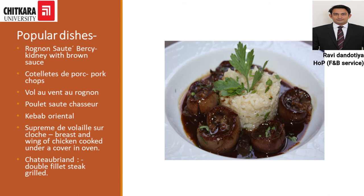Some examples of entrée courses are as follows: the first one is rognon sauté Bercy — rognon is the French term for kidney. Then we have côtelette de porc, which are pork chops. Then we have vol-au-vent rognon — vol-au-vent is a pastry filled with a paste of kidney. We also have poulet sauté Cheshire, kebab oriental, suprême de volaille poché, and chateaubriand.